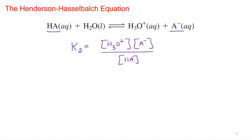So I'm going to take the negative log of the Ka and the negative log of this whole shebang, H3O plus A minus all over HA.